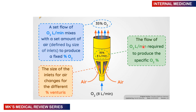Here's how the Venturi mask works: oxygen flows from the tank, and this jet of oxygen mixes with room air. The size of the inlets depends on the color of the connector, which determines how much air mixes with the oxygen jet, giving a final percentage of inspired oxygen. For example, with a yellow connector at 8 liters per minute, the patient will be inspiring 35% oxygen.